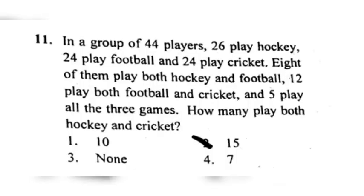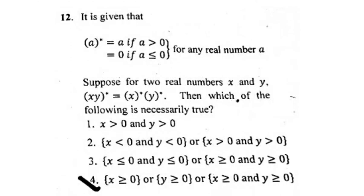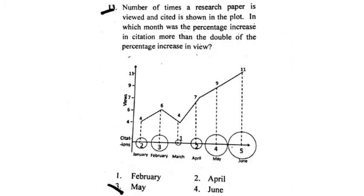This is question number 11. They are asking how many players play both hockey and cricket, and the right option is 15 players, option number 2. The next question is about real numbers, asking which of the following is necessarily true. Option number 4 is correct: X is greater than or equal to 0, or Y is greater than or equal to 0, or both are greater than or equal to 0.